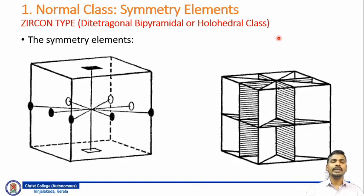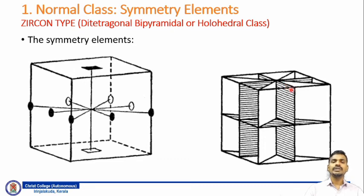In this diagram, the symmetry elements are shown. The vertical axis is an axis of four-fold symmetry shown as a rectangle, and there are four axes of binary symmetry — either diagonal or face to face. The figure also shows one horizontal plane containing both horizontal crystallographic axes and perpendicular to the c-axis, and four vertical planes each containing the vertical crystallographic axis C and one of the horizontal crystallographic axes, either a1 or a2. The crystal also possesses a center of symmetry. Thank you.